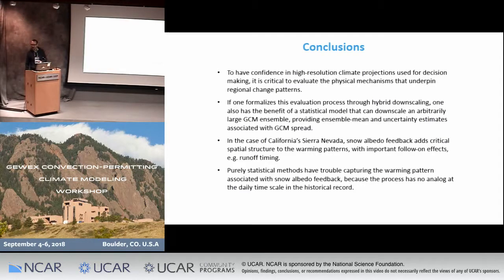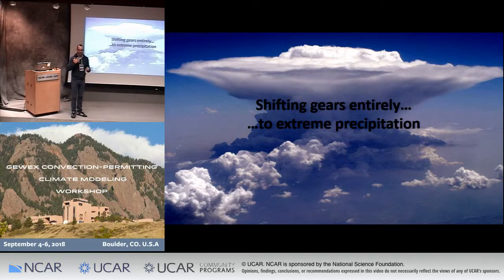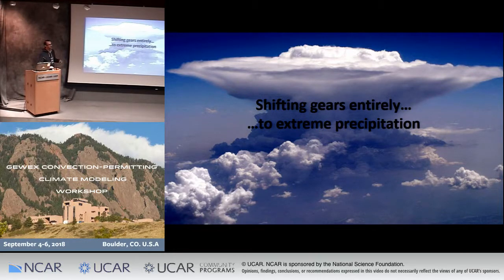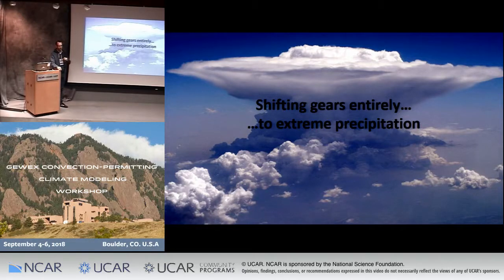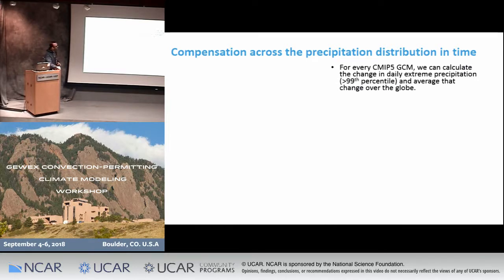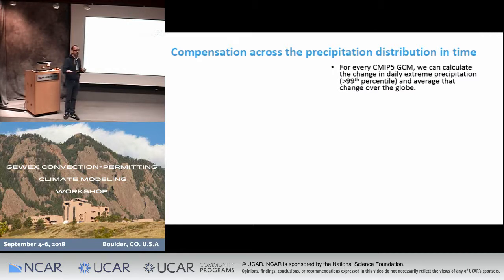Do I have time to switch to something different? This is unconventional, but I wanted to talk a little bit about extreme precipitation, inspired by the talks yesterday — I actually shortened the previous talk last night to make time for this. We've been looking at global models and how they produce changes in extreme precipitation, and the results are quite relevant for this group. We've been looking at the CMIP-5 GCMs and how they produce trade-offs between increases in extreme precipitation and decreases or smaller increases in non-extreme precipitation.